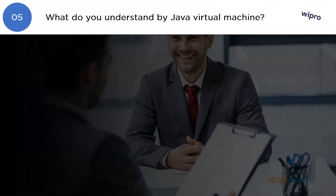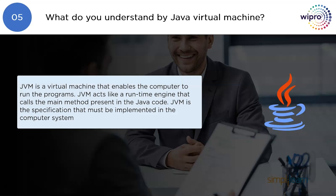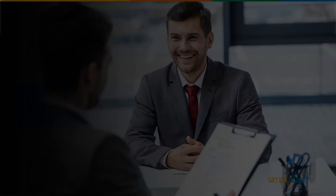What do you understand about the Java Virtual Machine? JVM is a virtual machine that enables the computer to run programs. JVM acts like a runtime engine that calls the main method present in the Java code. JVM is the specification that must be implemented in the computer system.